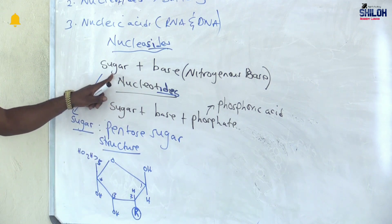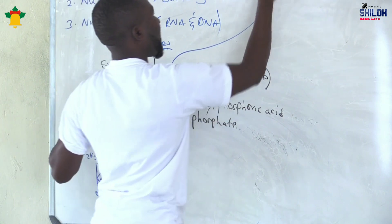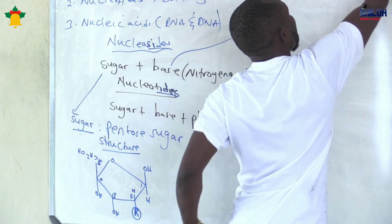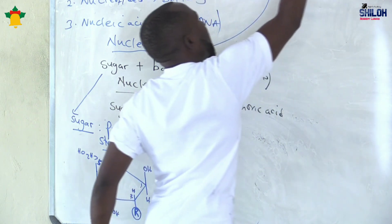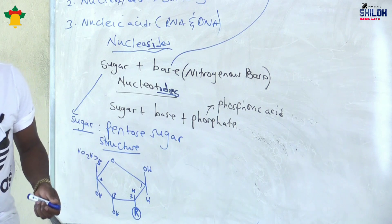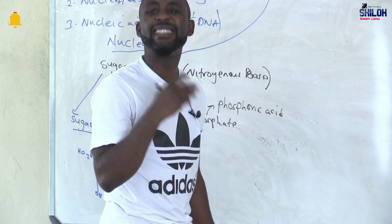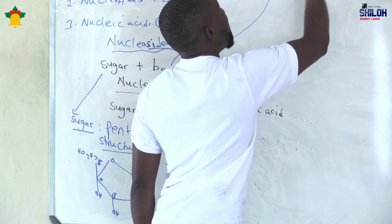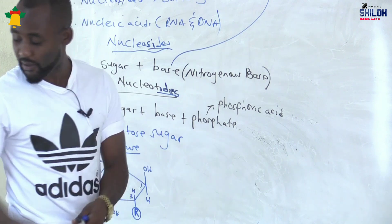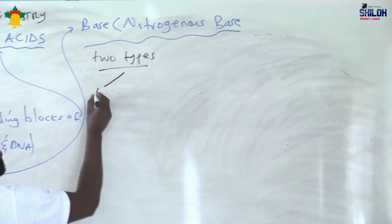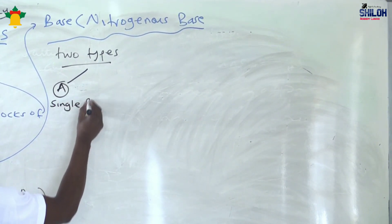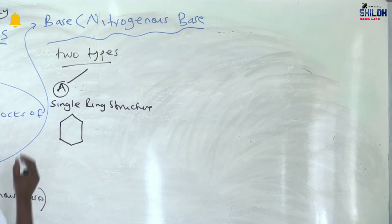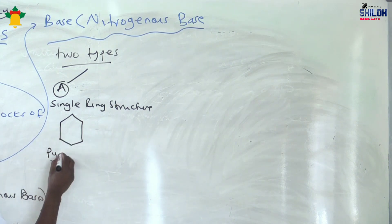So we are done with the sugar. My next discussion is the base — what is this base which we are calling the nitrogenous base? As the name suggests, in its structure it contains nitrogen. We have two types of nitrogenous bases. Type A has a single ring structure, and the name given to this type of nitrogenous base is pyrimidine.